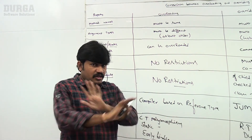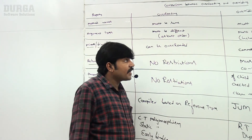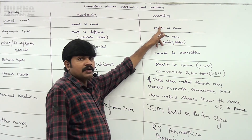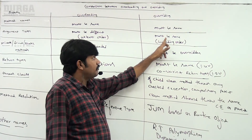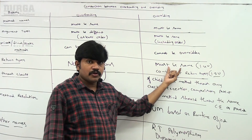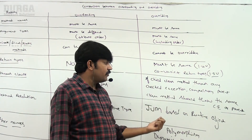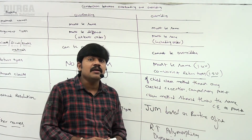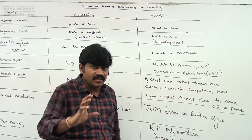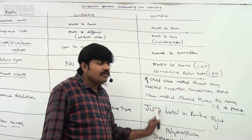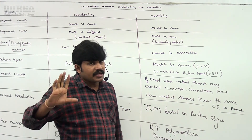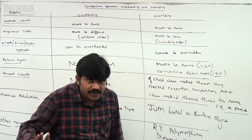But in overriding, everything must be checked — method names must be same, argument types must be same, return types must be same or covariant, throws keyword rules, access modifiers, and more. There are several restrictions in overriding, whereas overloading has no such restrictions.